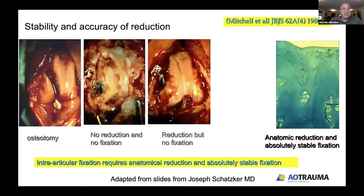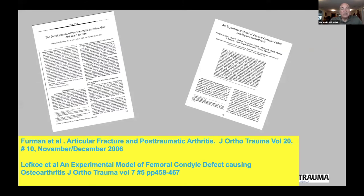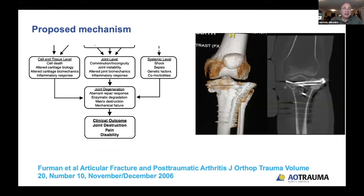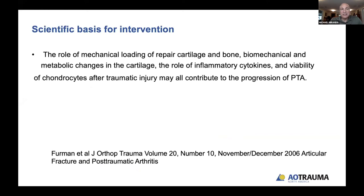A stable and accurately reduced joint will give us the optimal outcome given the situation. Furman in a paper in JOT in 2006 proposed a mechanism where joint incongruity and instability cause altered joint biomechanics, which create an inflammatory response. This initiates an aberrant repair response — enzymatic degradation, matrix destruction, mechanical failure — leading to the clinical outcome of joint destruction, pain, and disability. So there is a scientific basis for our intervention.